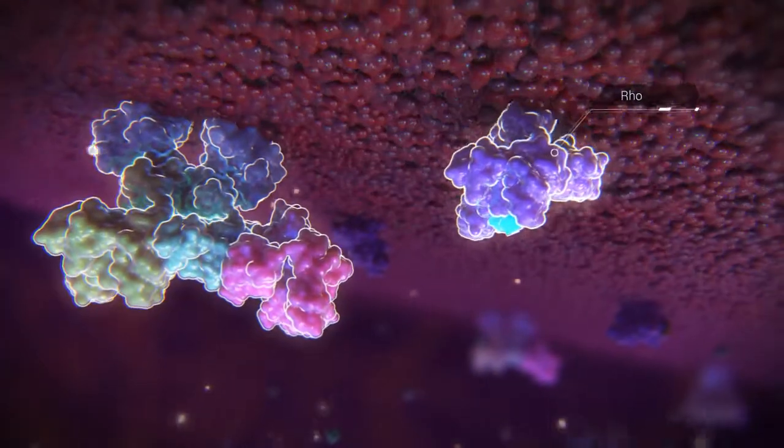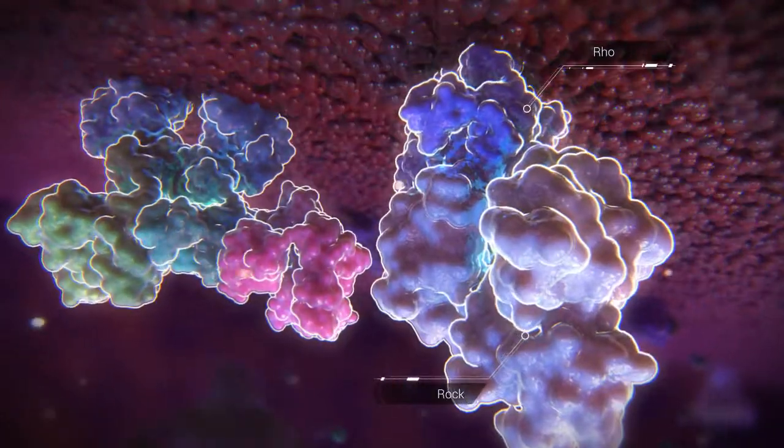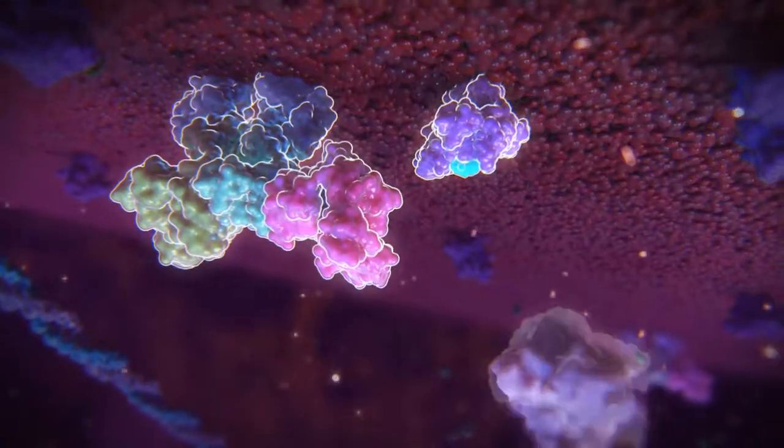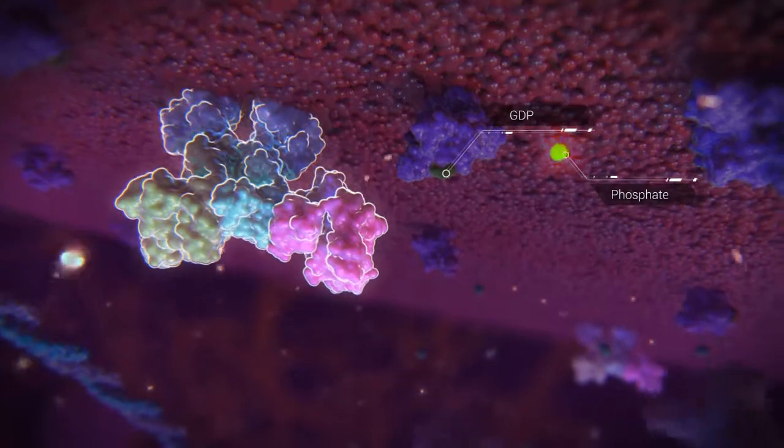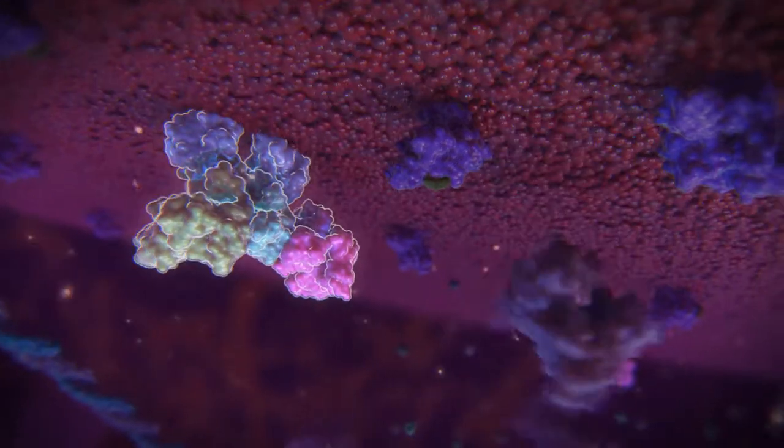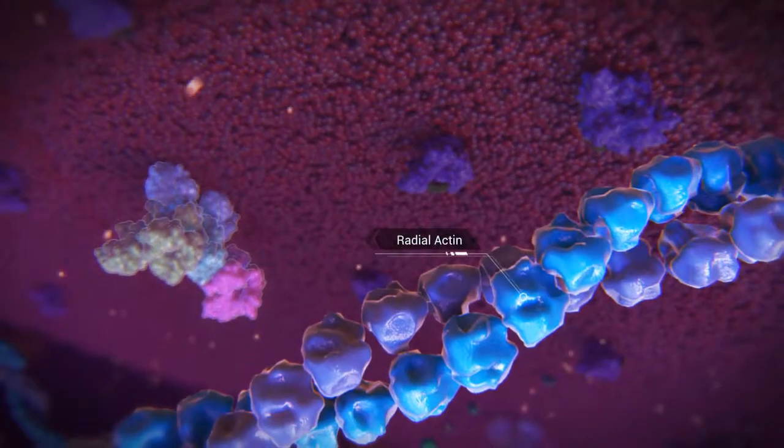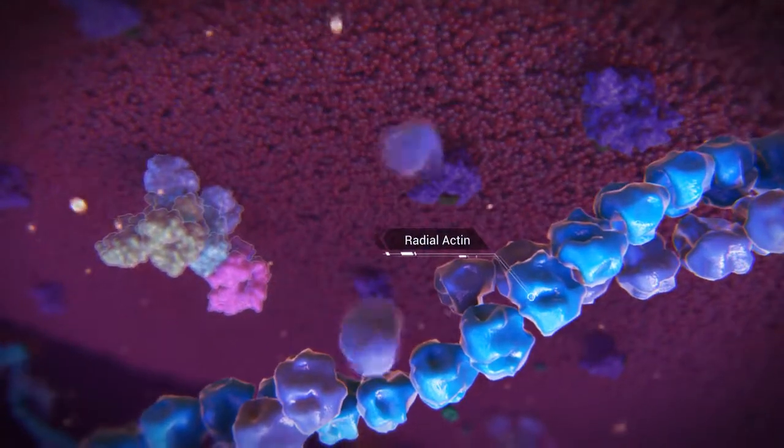GTP-bound active RHO interacts and activates the protein kinase ROC to form radial actin. The newly formed RAP1-ARCHGAP29 complex inactivates RHO. ROC is no longer activated and radial actin falls apart.